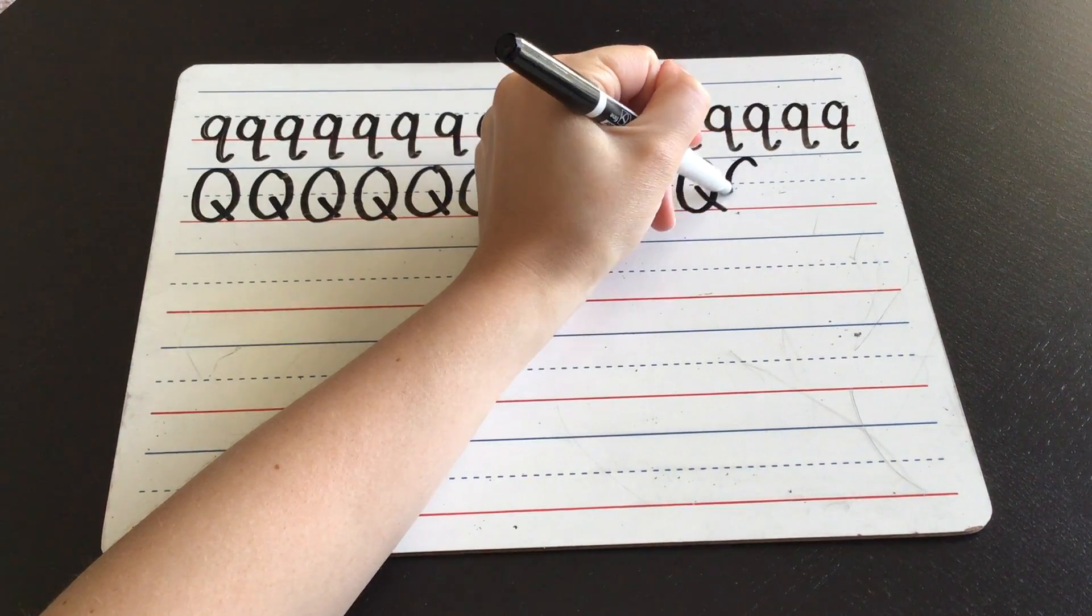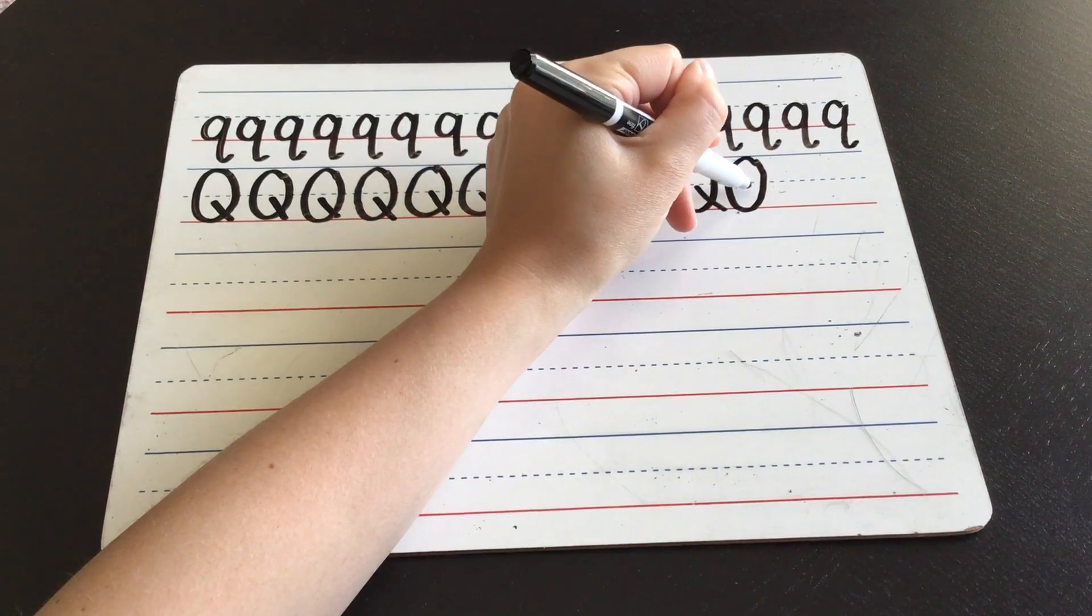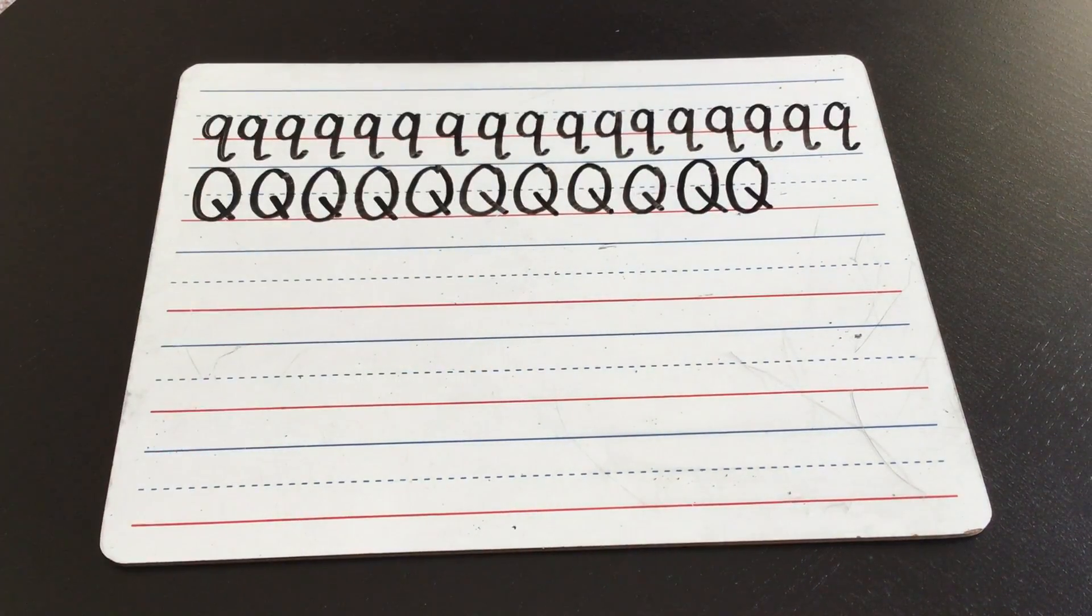So we draw a circle, letter O, and then a line coming out of it. That's the fastest way to write a capital Q.